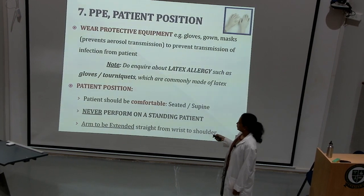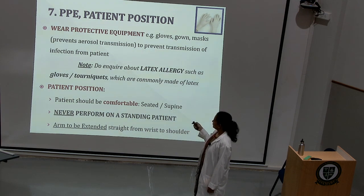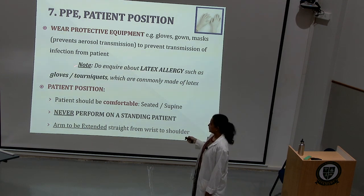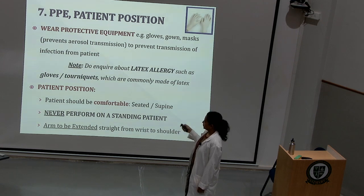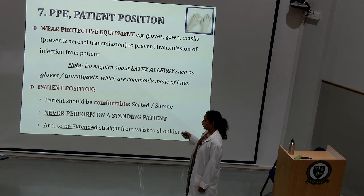Once you decide to perform the test, the technician should wear all personal protective equipment — gloves, mask, etc. Inquire whether the patient has any history of allergy to latex, since gloves and tourniquets are mostly made of latex. Once ready to collect the sample, make sure the patient is comfortably positioned — either seated or in the supine position. Never perform phlebotomy on a standing patient. The arm from which blood is collected should be extended straight from wrist to shoulder.